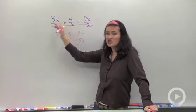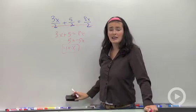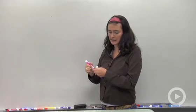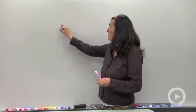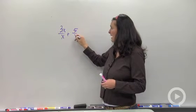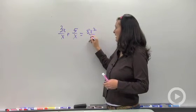You can cross them out and just work with the numerators. Let me show you what that would look like if I had my variable in the denominator. You can do the same idea. If I had like 3x over x plus 5 over x is equal to 8x squared over x...